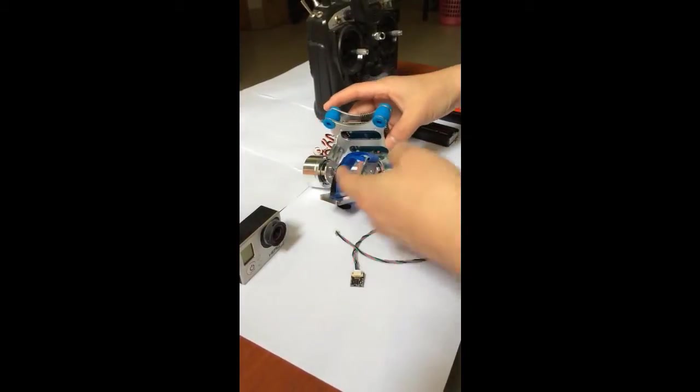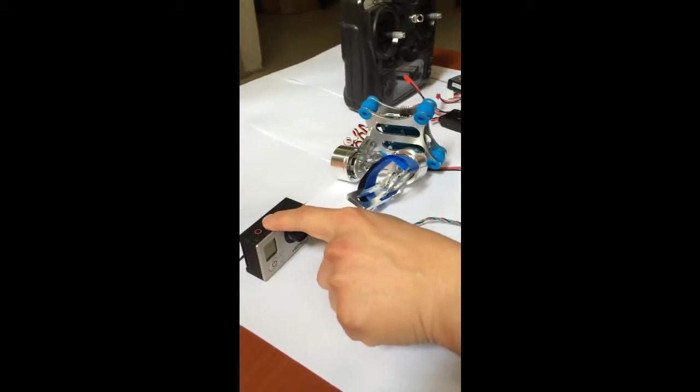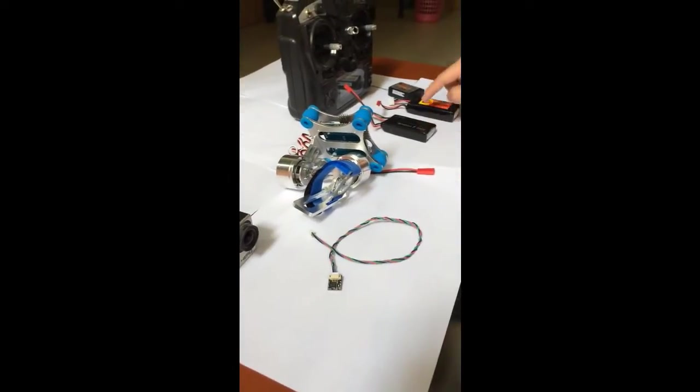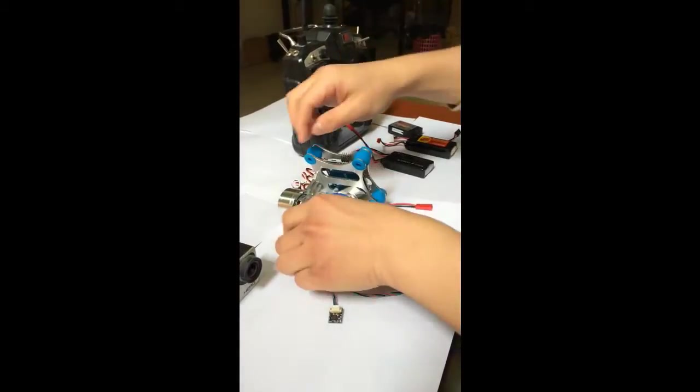Hello everyone, this is brushless Gimbo with sensible GoPro 3 camera, 2S battery, 3S battery, and Flysky transmitter. Let's begin.